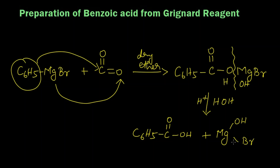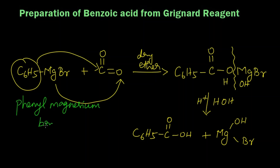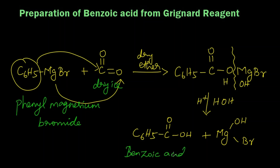Let's write the names for these compounds. Grignard reagent — that is phenyl magnesium bromide — reacts with solid carbon dioxide (dry ice) in the presence of dry ether. We get an intermediate which on further acid hydrolysis gives benzoic acid and hydroxy magnesium bromide.